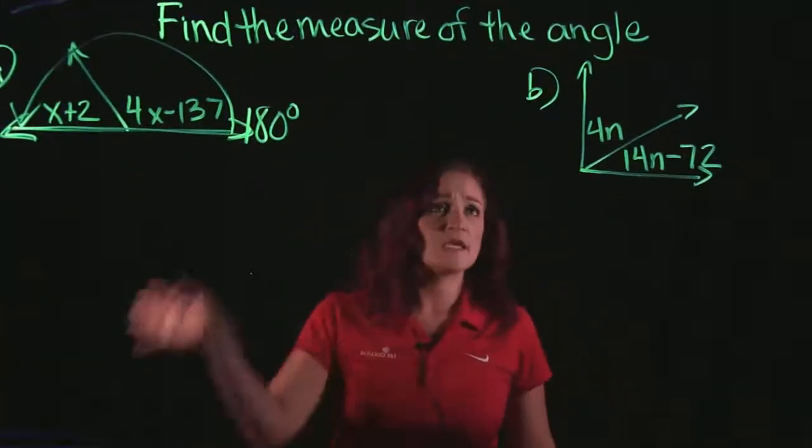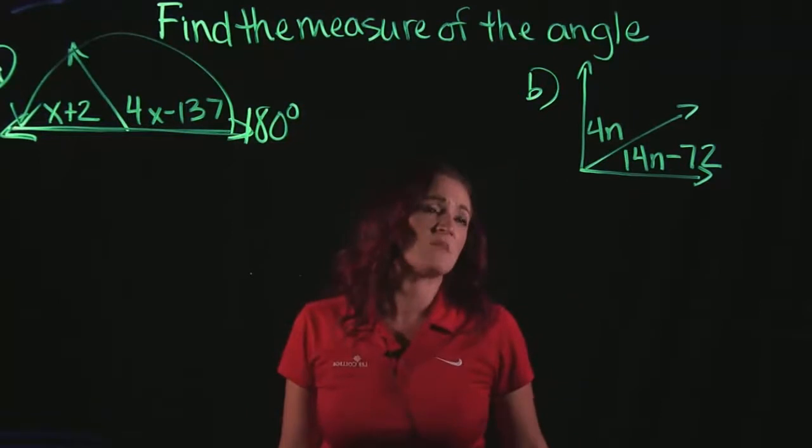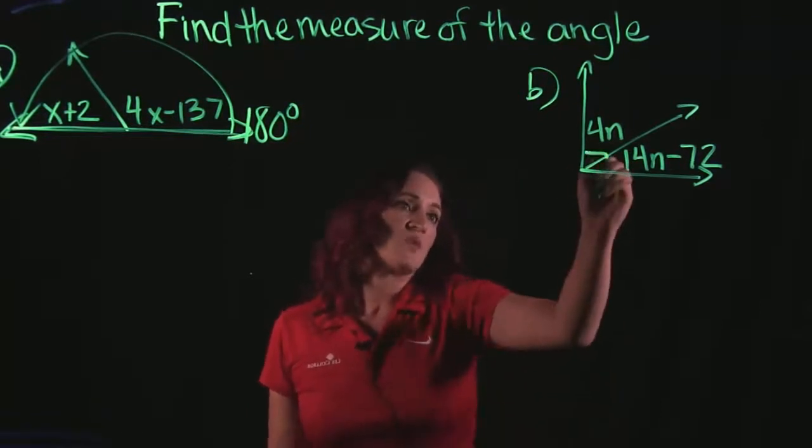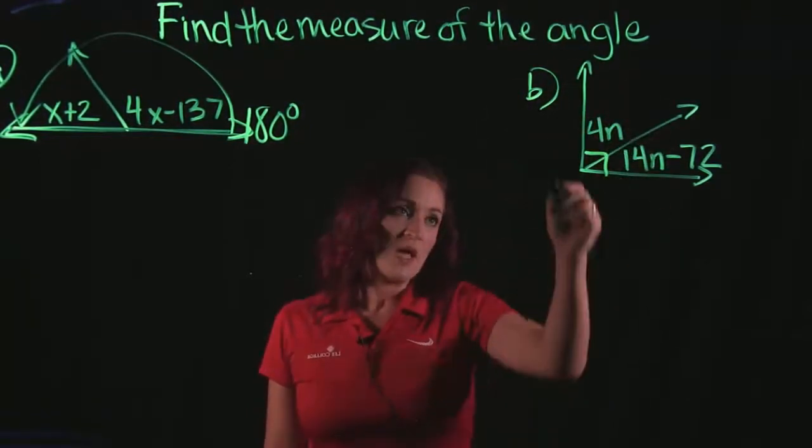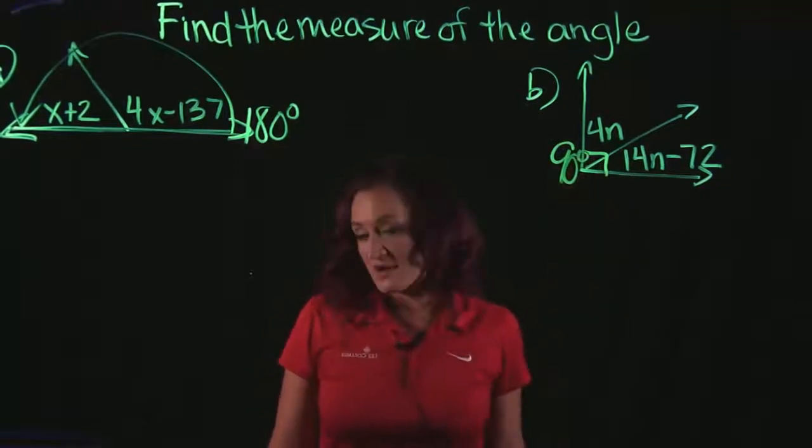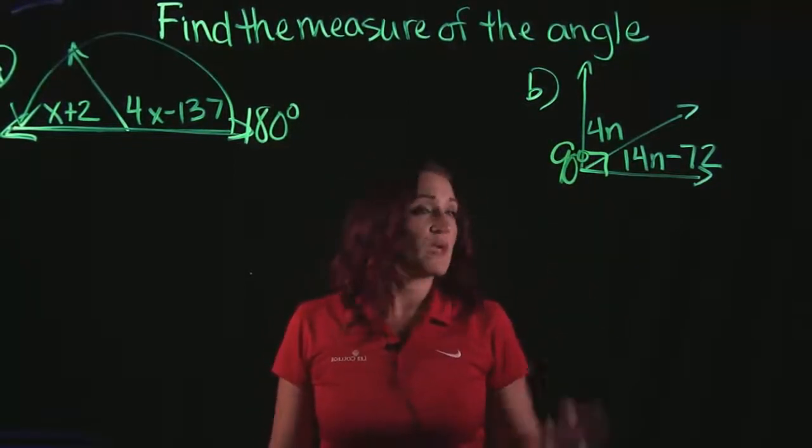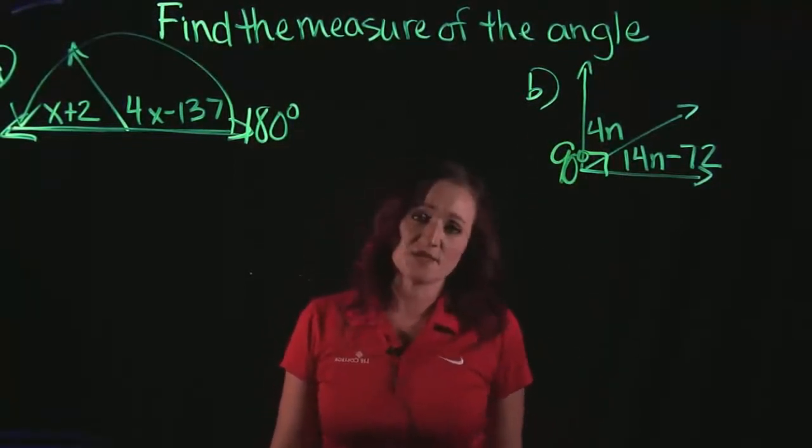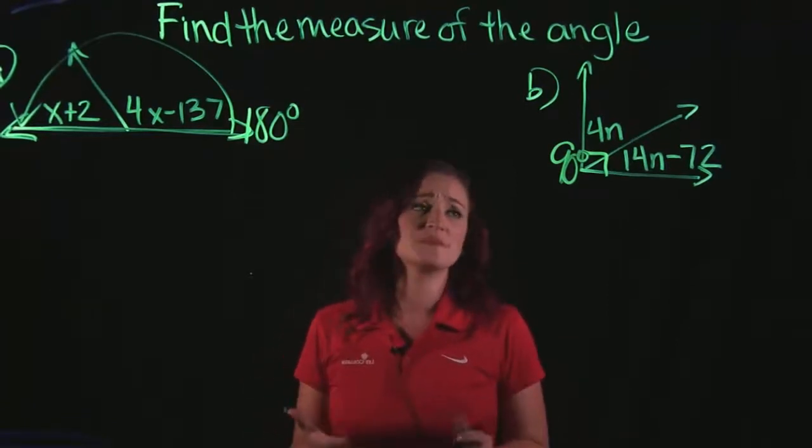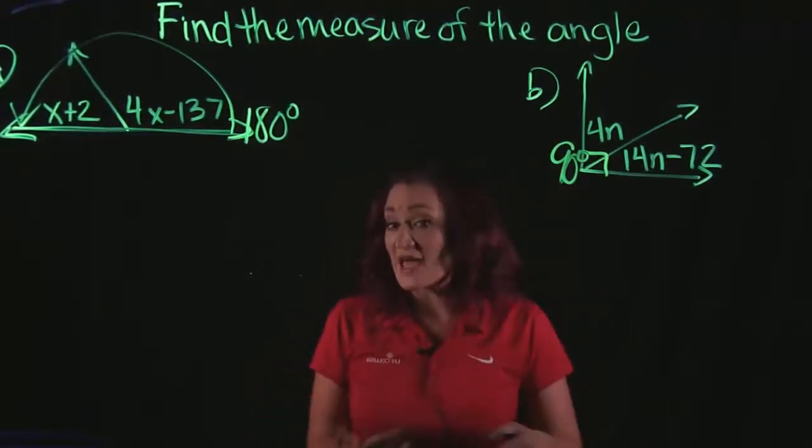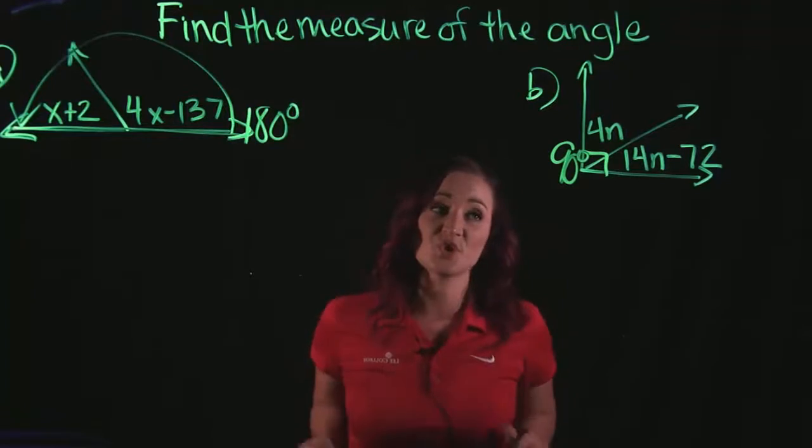So let's take that understanding and apply that to our second example here. Our second example, we have a right angle. And a right angle is made up of 90 degrees. So we have two angles inside of this right angle. So similar concept. These two angles should add up to 90 degrees.